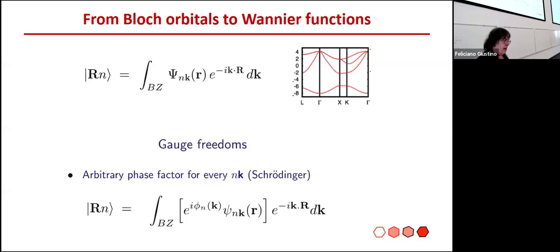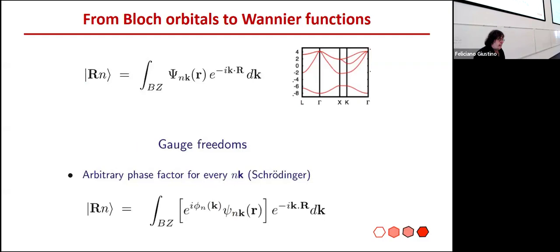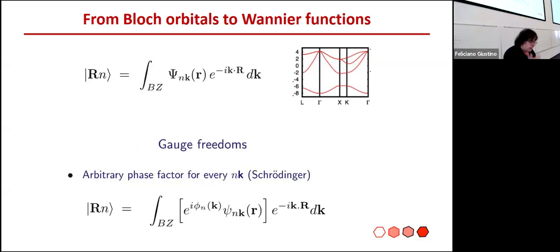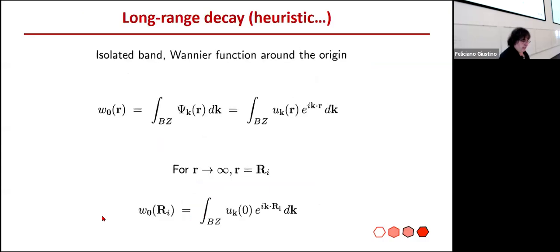This transformation is ill-defined because from the Schrödinger equation or DFT, we have what we call gauge freedom: at every K point, for every state, we can multiply by a phase e^{iφ_n(K)} that will not change our expectation values. So in reality, at every K point and for every band we have this gauge freedom, and that will actually change what we obtain as a Wannier function.